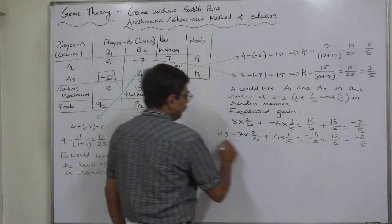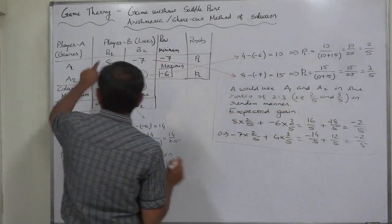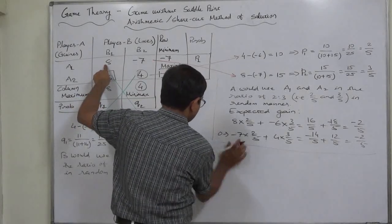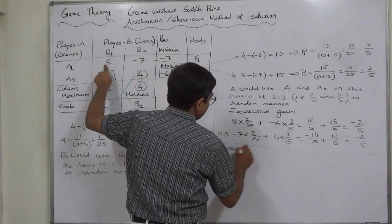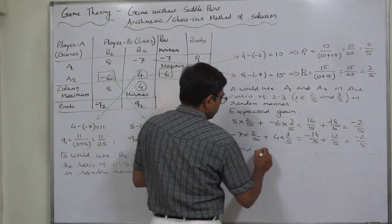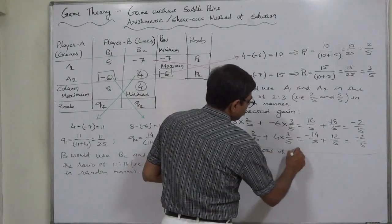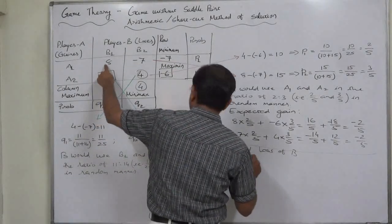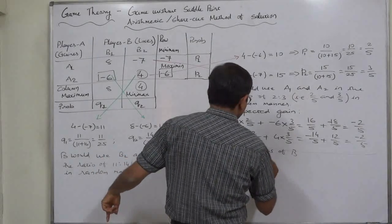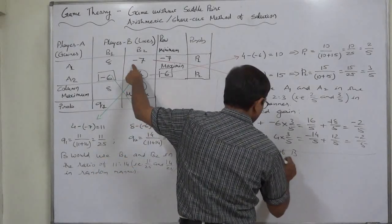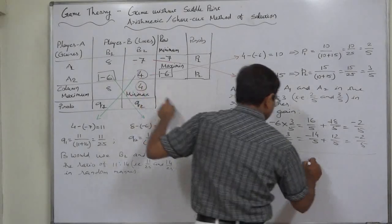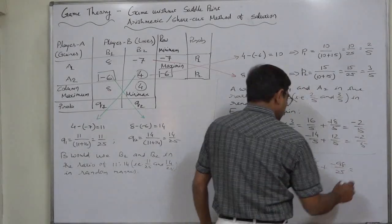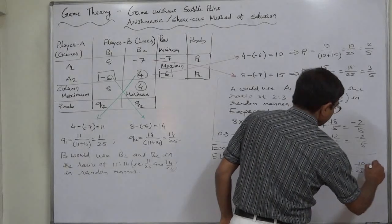B's expected payoff — I would prefer to use the term 'expected loss of B' because we have assumed B is a loser. If A uses strategy A1, it will be 8 into 11 by 25 plus minus 7 into 14 by 25, that is 88 by 25 plus minus 98 by 25, so it comes to minus 10 by 25, that is minus 2 by 5.